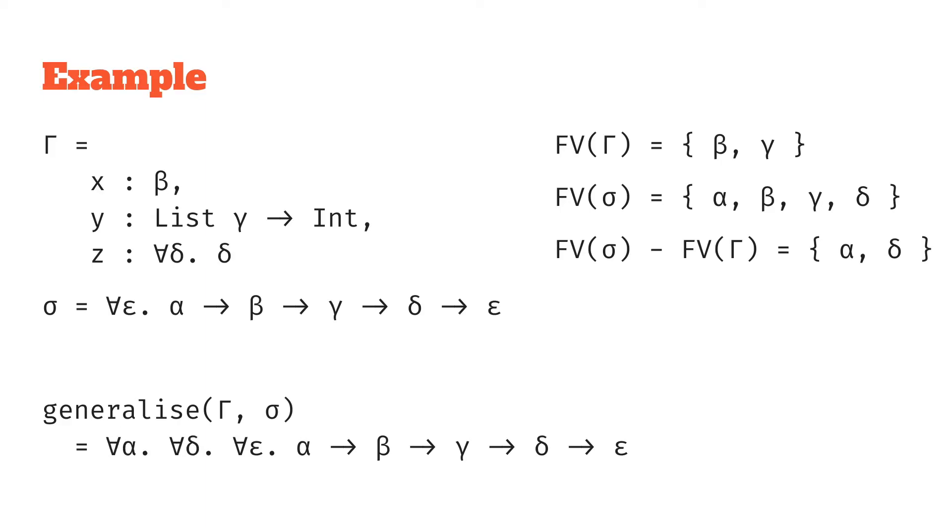So overall our answer is for all alpha, for all delta, for all epsilon, alpha to beta to gamma to delta to epsilon is a generalized type in that context.